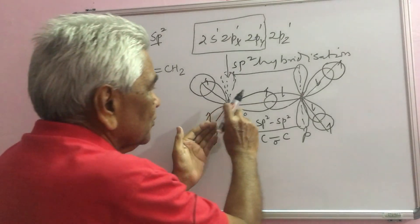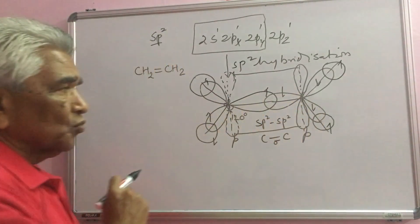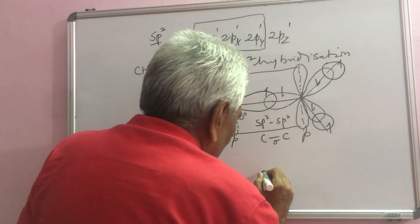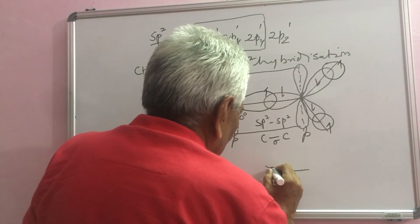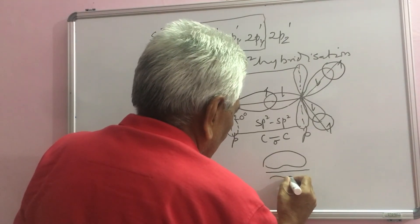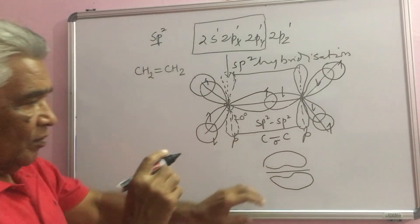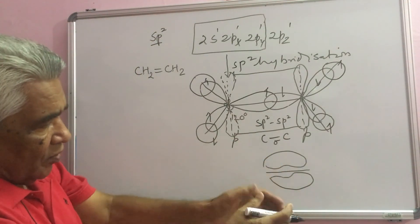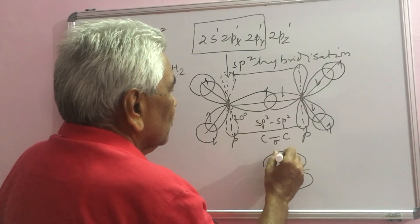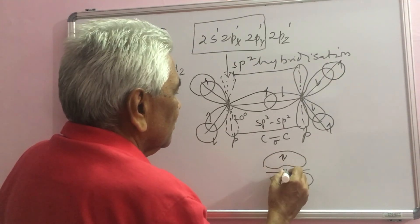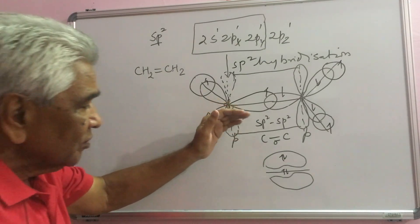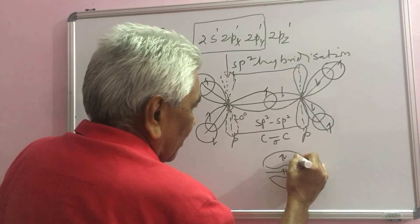The sigma bond, which is concentrated along the line joining the two nuclei, is surrounded by pi electrons. This encompasses the sigma electron pair. Here you have two electrons and this also has two electrons. So this sigma and pi together...